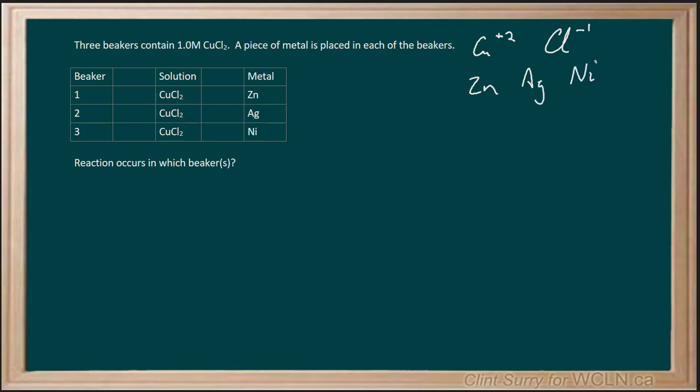Putting them in order from the table, we know that chlorine plus 2 electrons gives us chloride ions, is found at the top of the table at plus 1.36 volts. Silver is found at plus 0.80 volts.